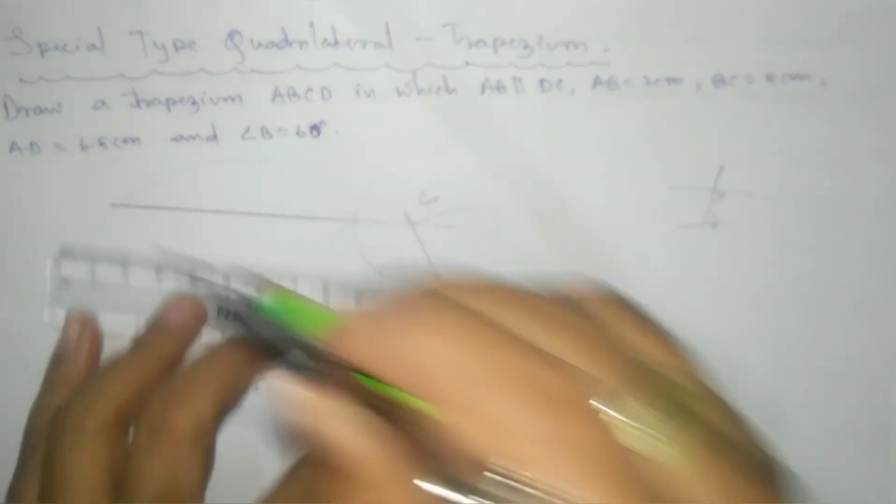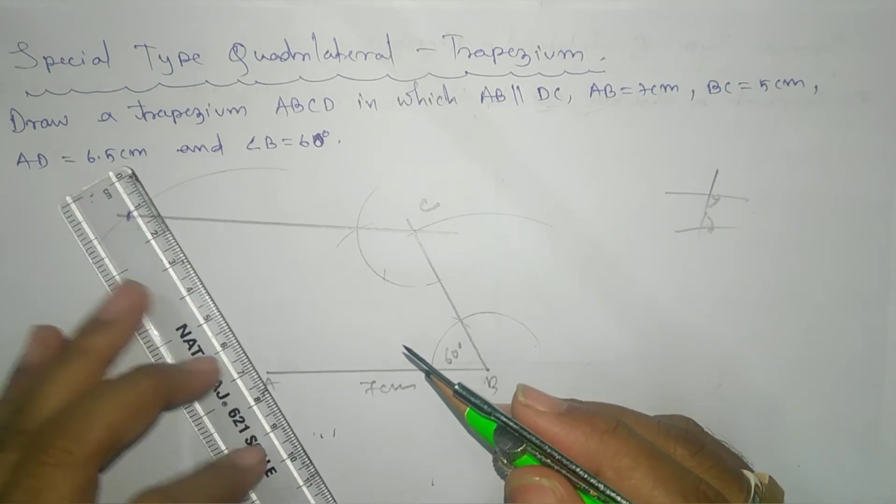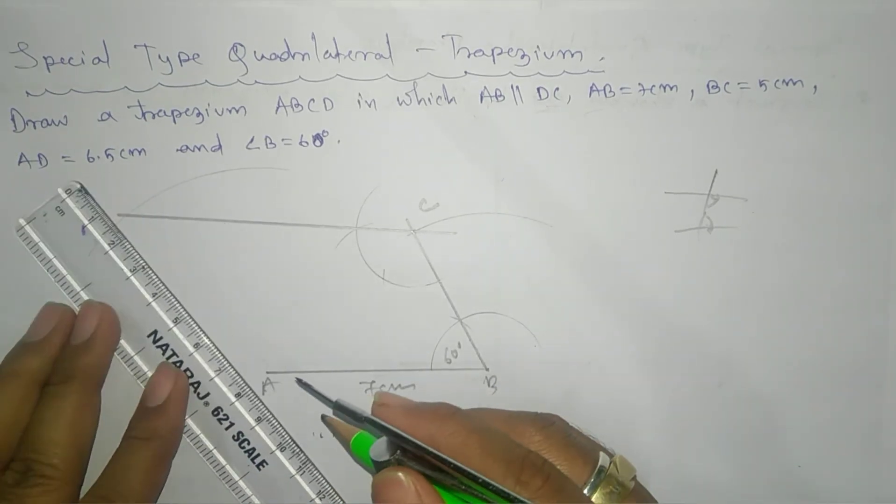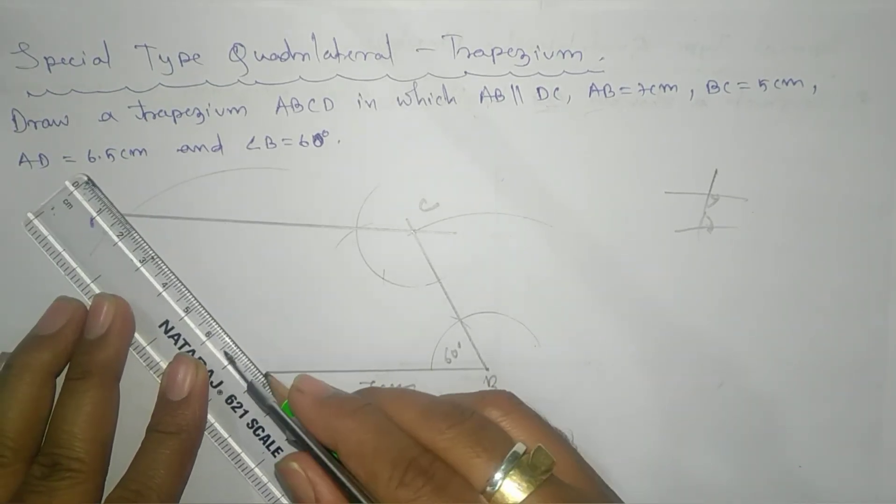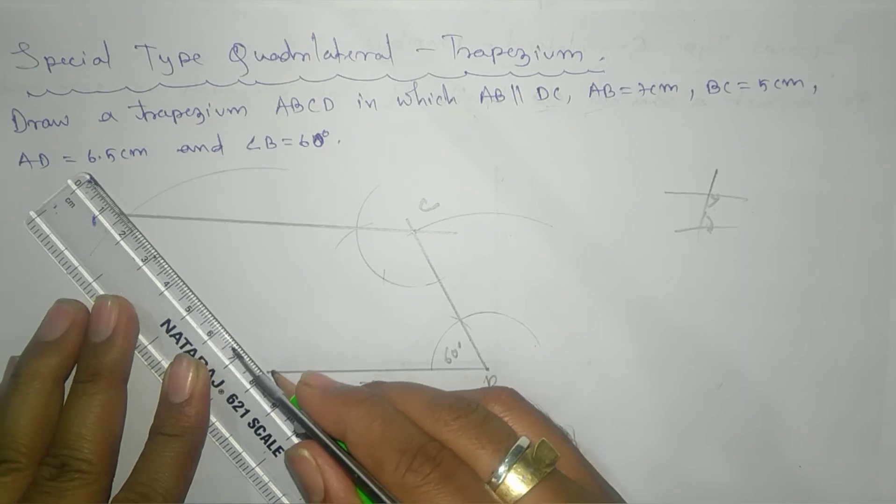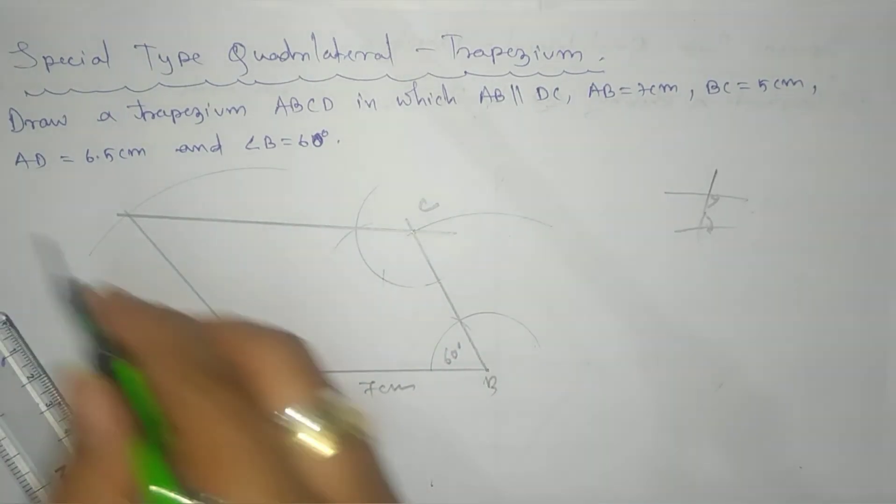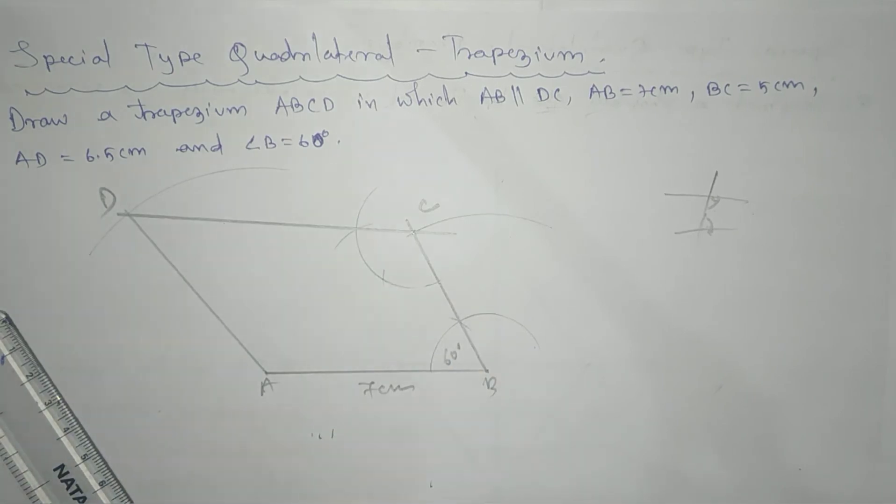So this will be AB parallel to CD, so intersect here. This is your AD. So D. This is your required quadrilateral, that means trapezium, special type quadrilateral trapezium,